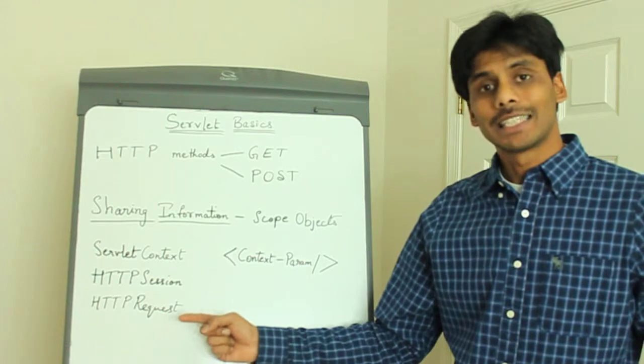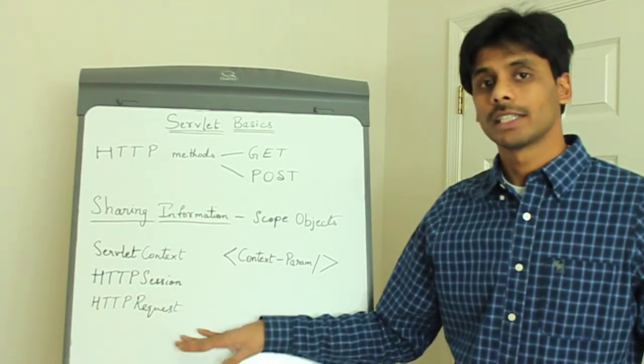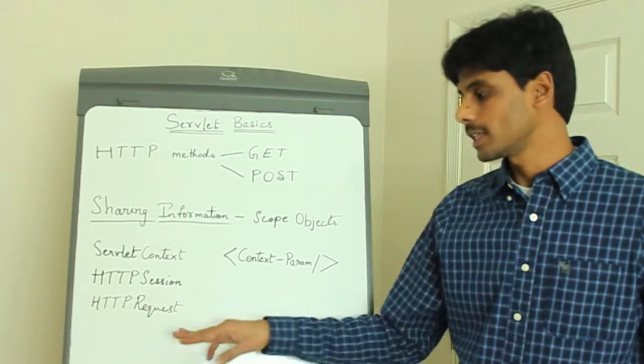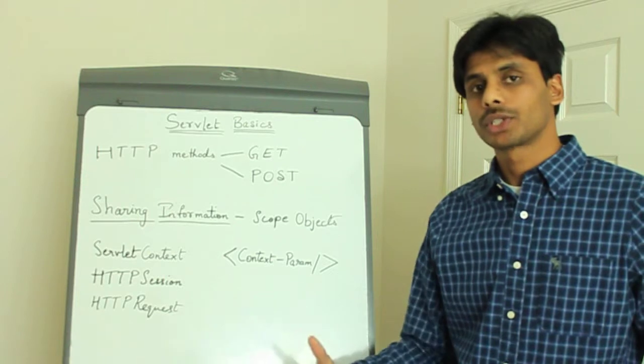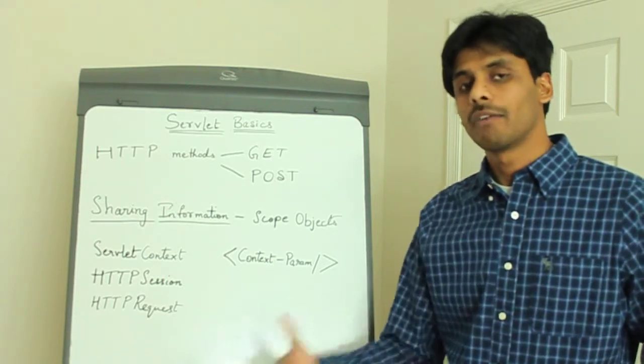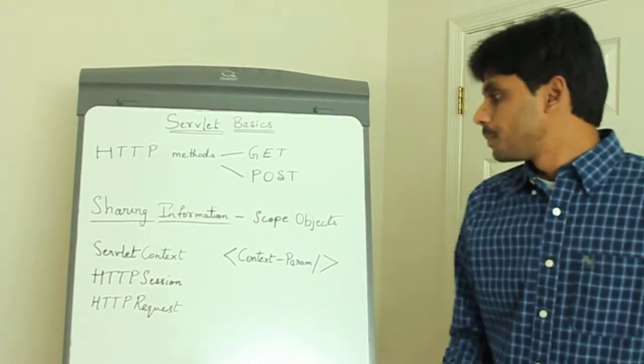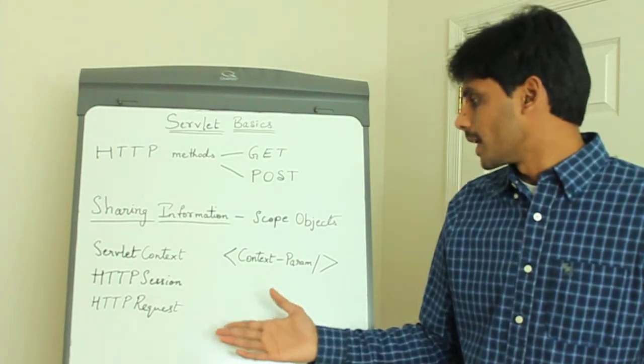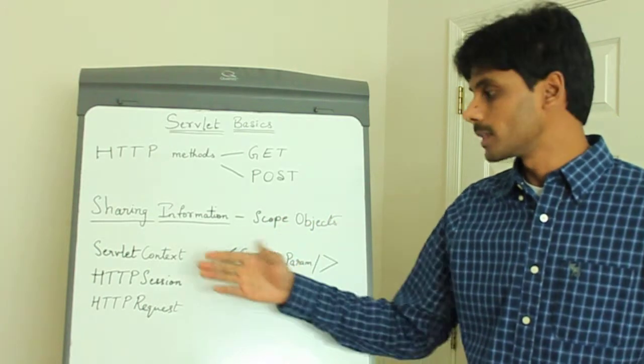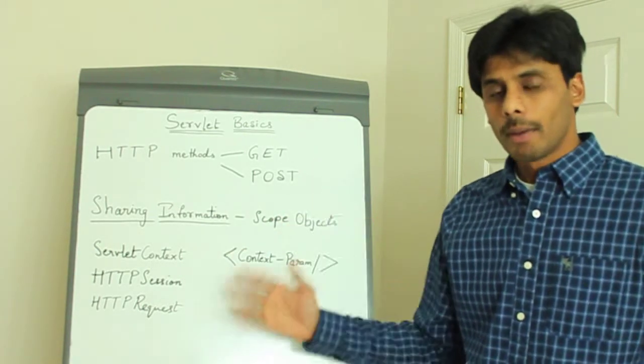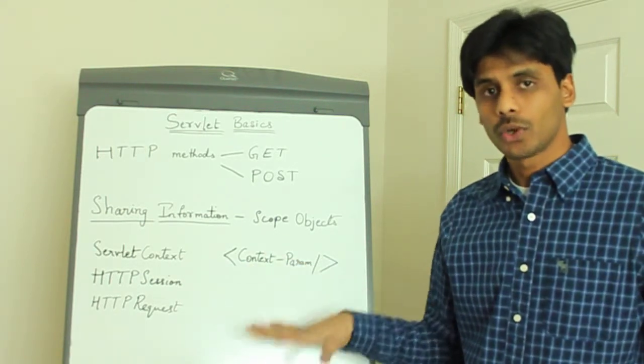The last one here is HTTP request. This is, as the name itself indicates, at a request level. So if you set something here, any other servlet or JSP to which your request is being forwarded will have access to those attributes. So sharing information is very easy. And these are also called scope objects because they define the scope. The servlet context is at a web application level scope, whereas the HTTP session, as I said, is a session scope.